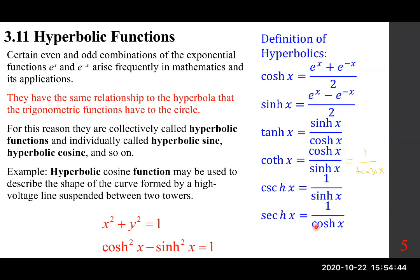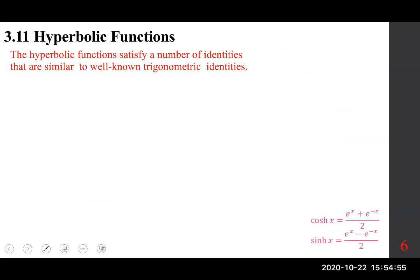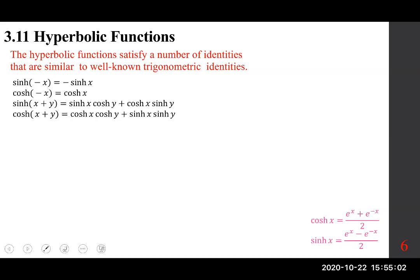Hyperbolic functions satisfy a number of identities similar to trig identities, but with some differences. For example, sinh of minus x equals minus sinh x, and cosh of minus x equals cosh x — every function is odd except cosh and sech, just as in trigonometry. Sinh of x plus y works like the sine addition formula.